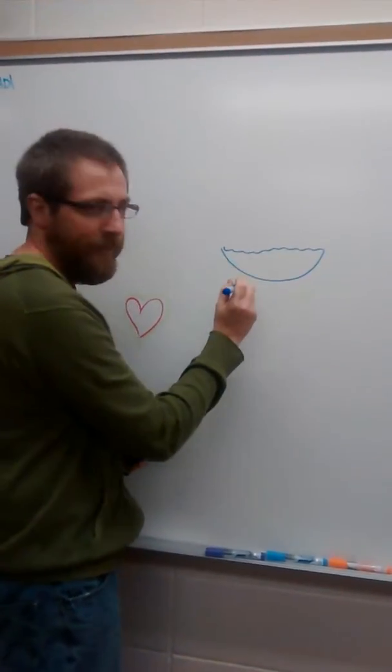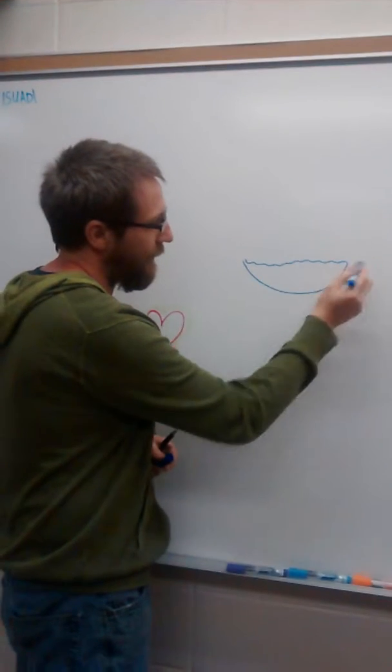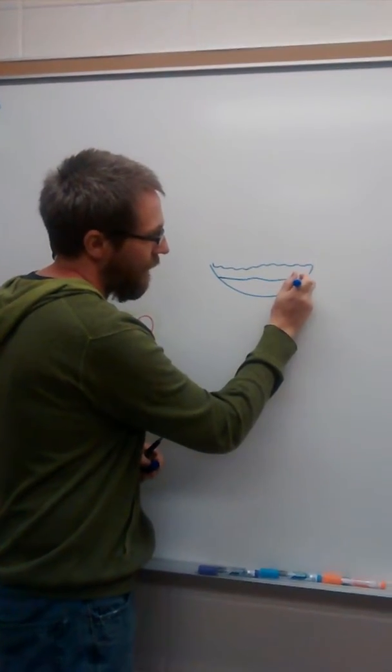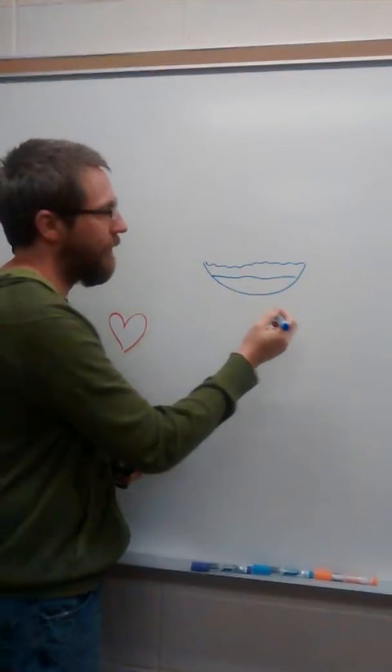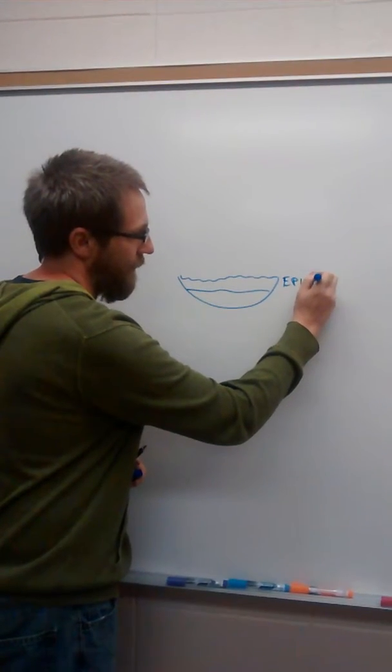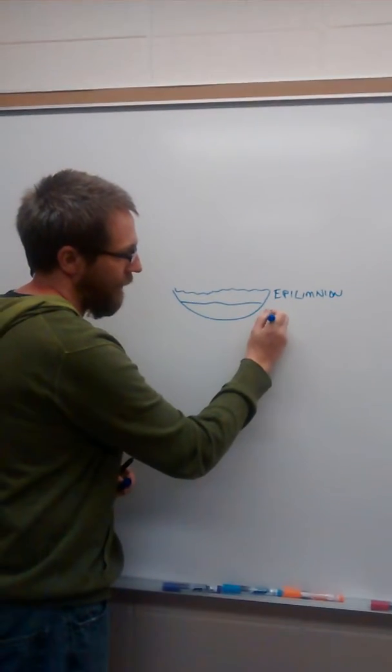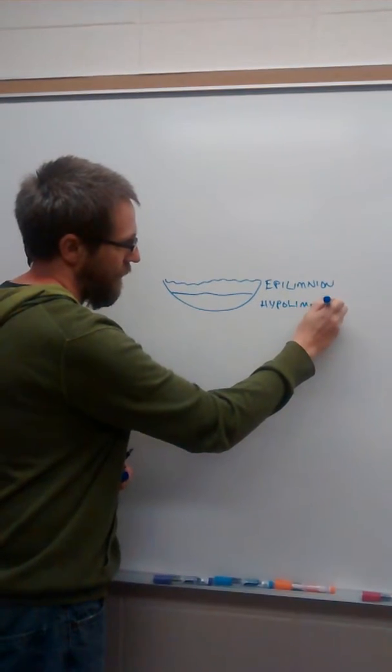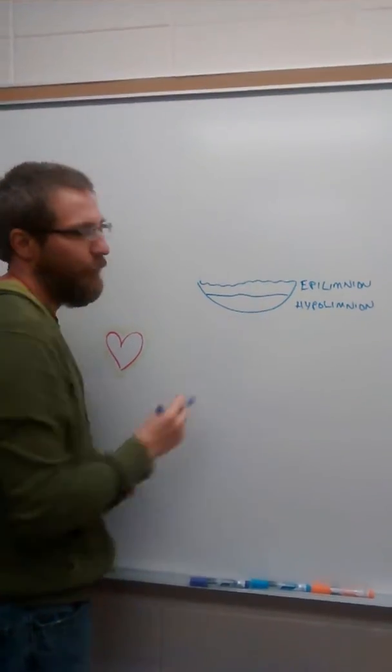So if you're at the surface of the lake there's usually a barrier between the upper water and the lower water. This is known as the epilimnion and the lower water the hypolimnion and that barrier is temperature dependent.